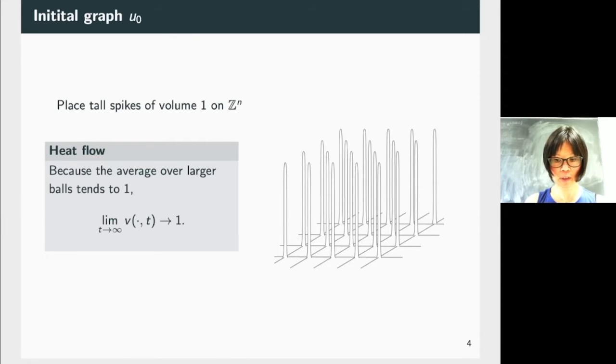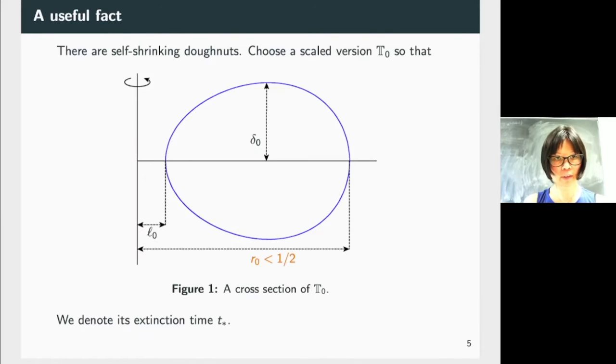To know what the mean curvature flow does, we're going to take a little detour and recall a useful fact. The useful fact is there are self-shrinking doughnuts, and that's the title of the article. These doughnuts have been proven to exist by an argument.